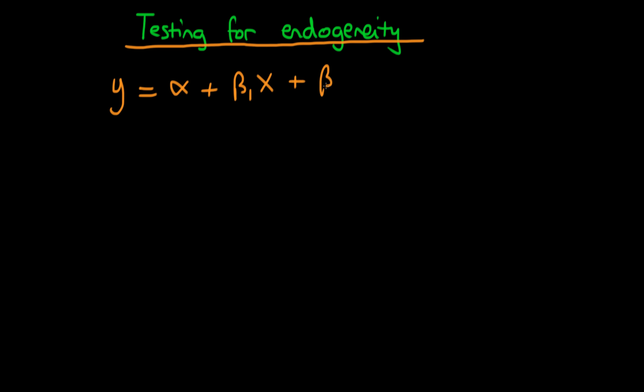In this video, I want to talk about how we go about testing for endogeneity of a given variable within our regression. The idea here is that we're going to include in our structural equation one suspected endogenous variable x and one variable which we know to be exogenous, which I'm going to call z1, as well as our error epsilon.